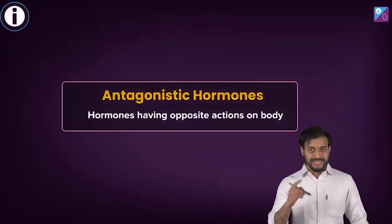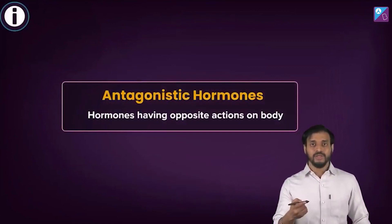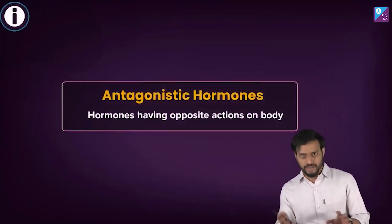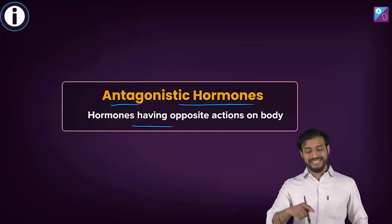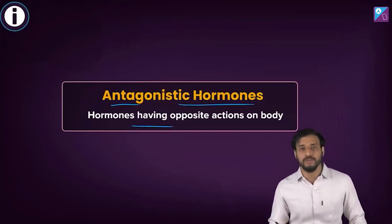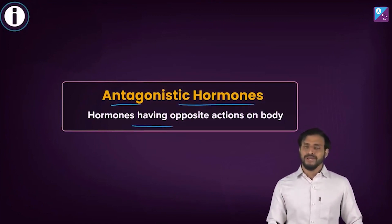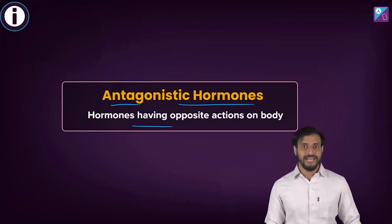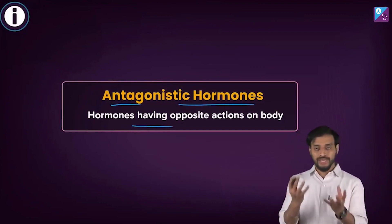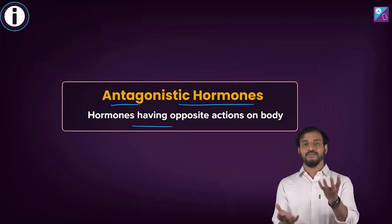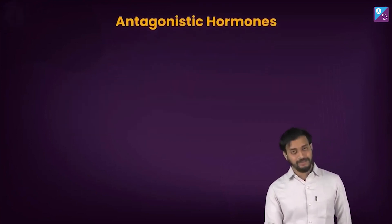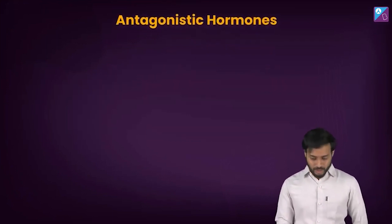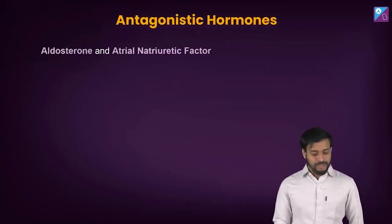If I talk in terms of hormones, there are some hormones which are opposite in function. These are known as antagonistic hormones — hormones having opposite actions on the body. I've already talked about these hormones, but now you will realize how some hormones have functions opposite to each other. Let's take examples and study.